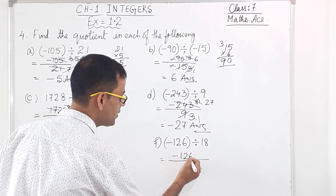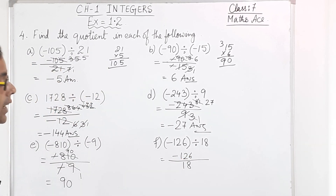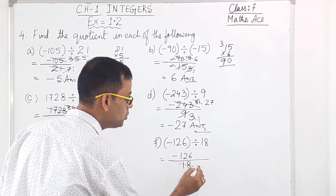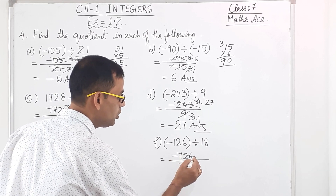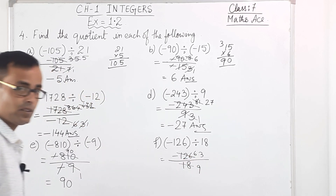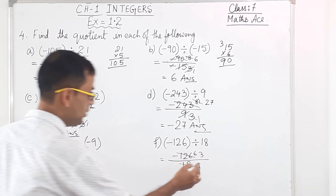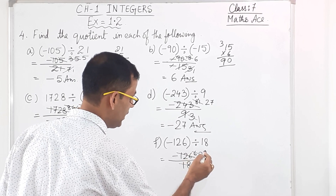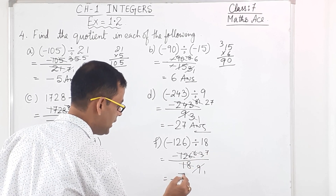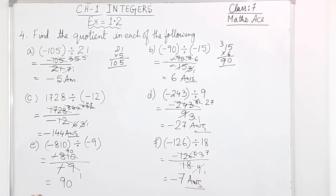Last one for Question 4, F: minus 126 by 18. If you cannot cut directly, cut with 9: 9 into 18 is 2, 9 into 126 is 14. Then cut with 2: the answer is minus 7. So Question 4 parts A through F are complete.